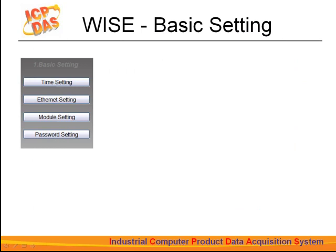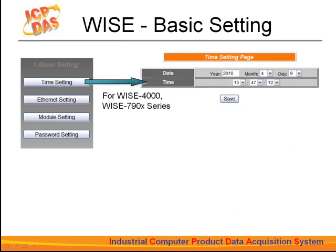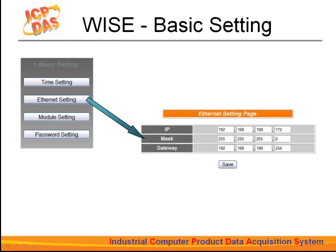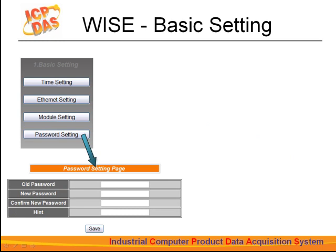For basic settings, first let's talk about the time setting, so you can adjust the time for the controller. This function only applies to modules with real-time clock functions. Ethernet setting is for IP mask and gateway settings. If you don't want your settings to be modified by unauthorized users, you can set up a password to prevent unauthorized access. After the password has been set, anyone who tries to upload logic rules to the controller will be asked to input the correct password. The default password is set to 'wise' in lowercase.